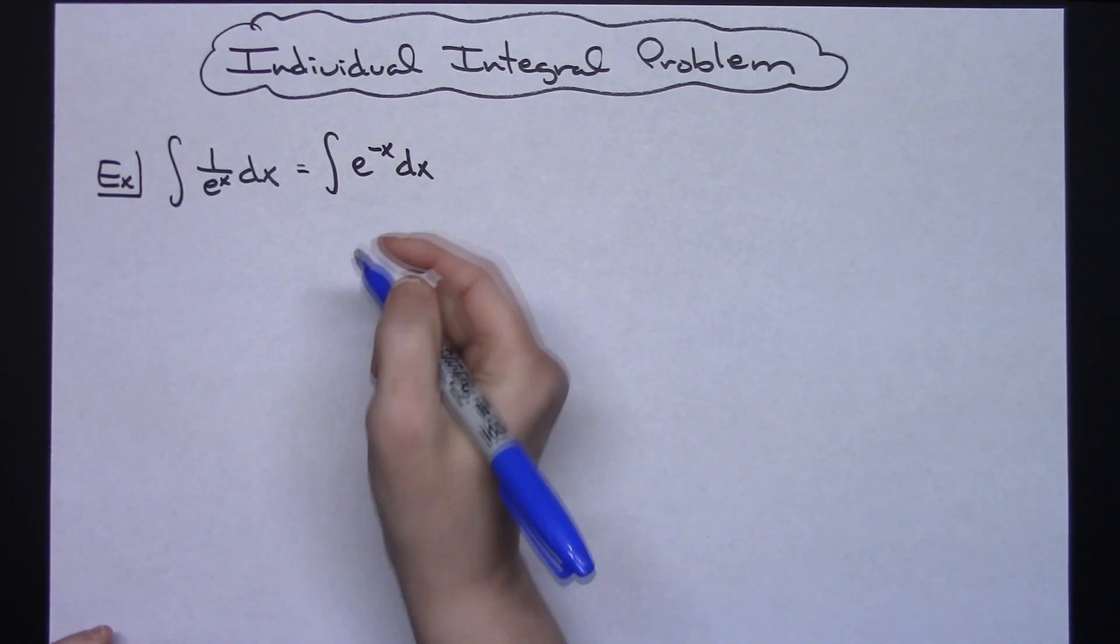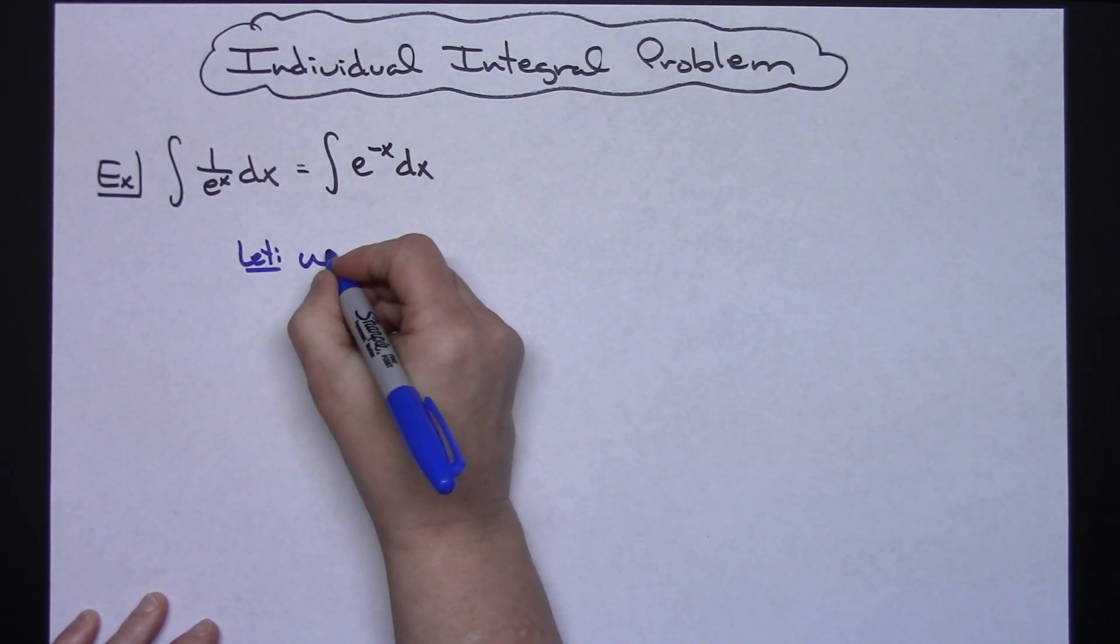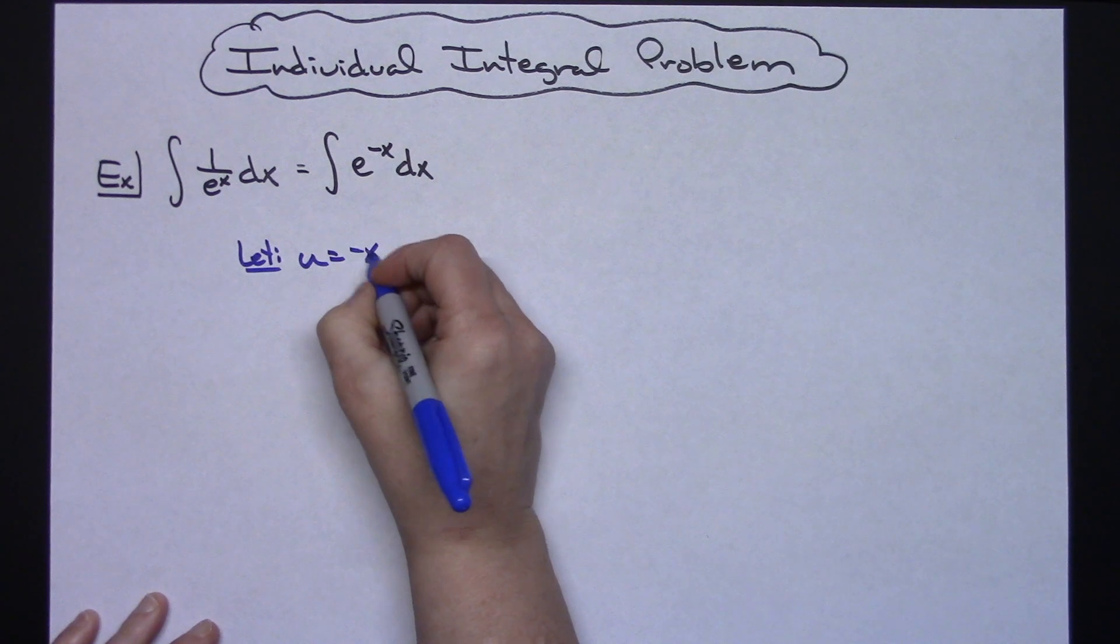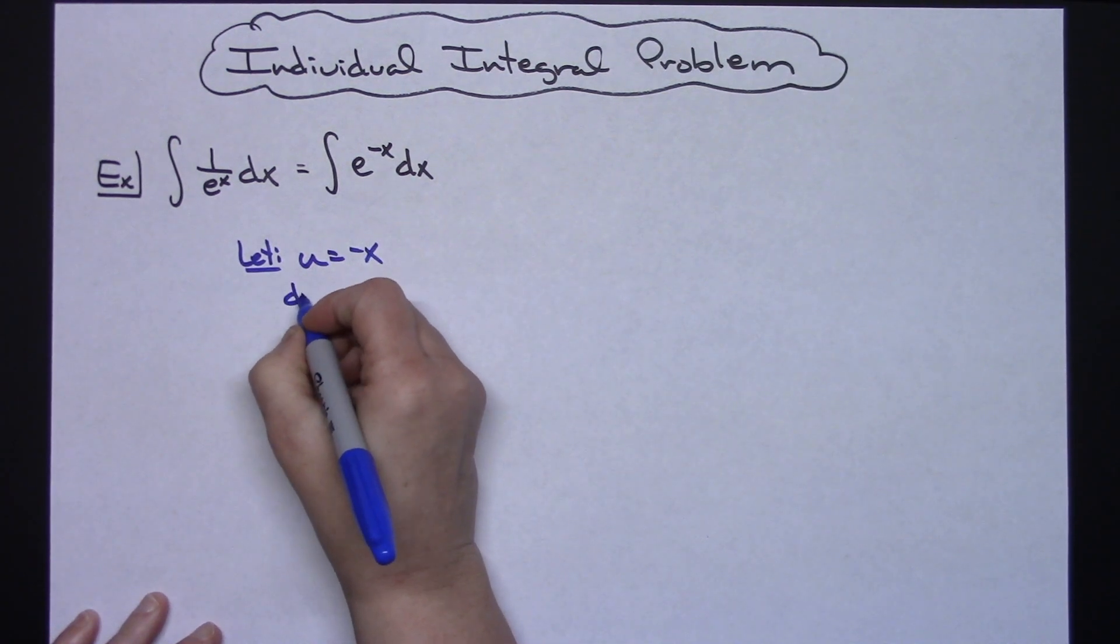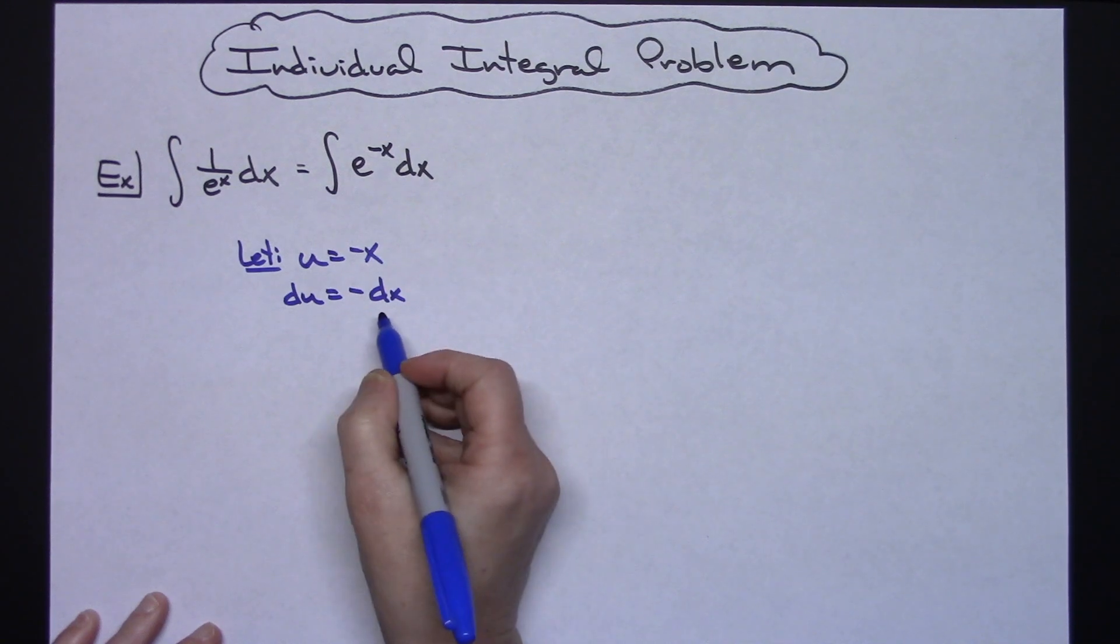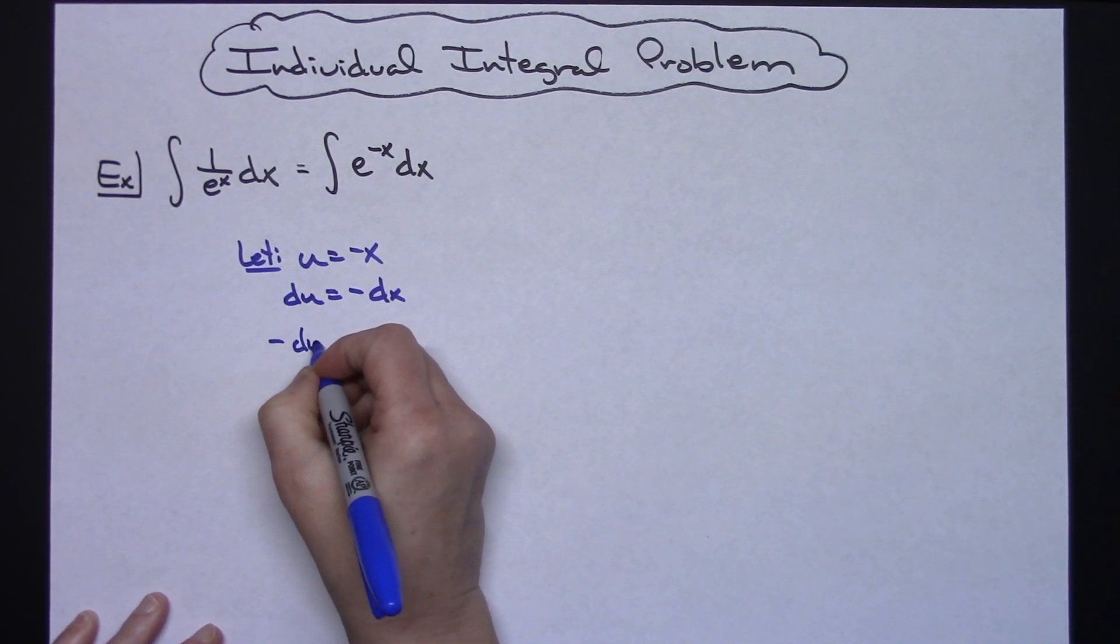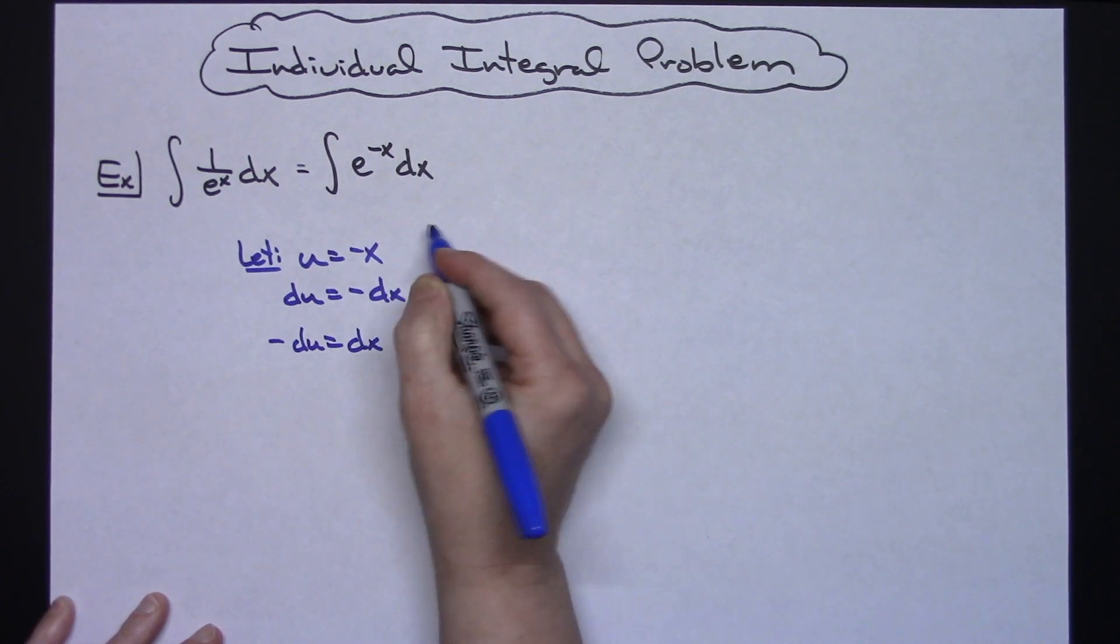From there I'm going to use a u-substitution. So I'm going to let my u equal the exponent which is negative x. Take the derivative of both sides there. I'm going to have a negative dx on the right, and then if I wanted to solve for dx I would have negative du is equal to dx.